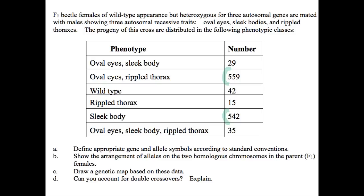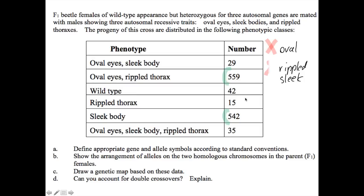We've got sleek body, and we've got oval rippled thorax. This tells us a couple other things as well — the F1 females of wild-type appearance and being heterozygous probably don't have all wild-type alleles on the same chromosome. We know that because although the traits are autosomal recessive, notice that one of them is all wild-type and we have a triple mutant, and they're also the same magnitude. It's unlikely one chromosome has all wild-type and the other has all recessive alleles. Hopefully you came up with oval and rippled sleek as your missing phenotypes — these would be the double crossovers, and we're going to look for an absence of those when we figure out gene order.